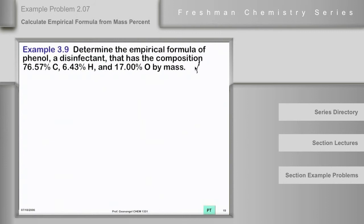We're going to take 100 grams, and so 76.57 grams of carbon converts, in the way that I just showed you, to 6.375 moles of carbon.